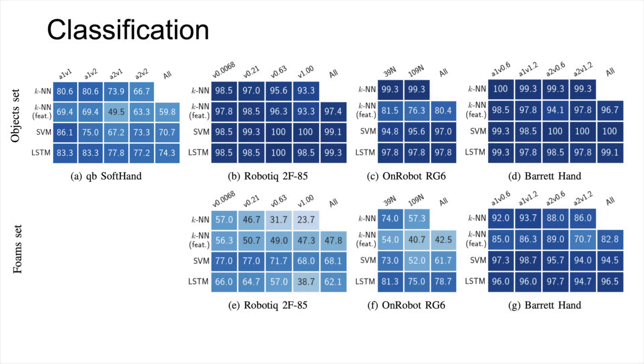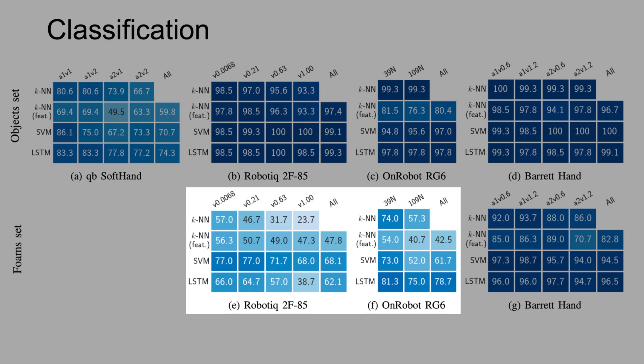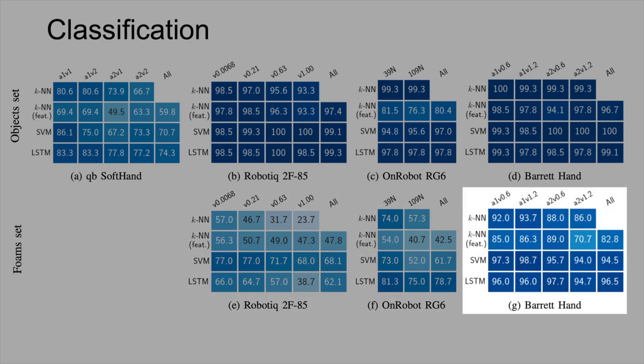On the challenging foam set, the performance of the industrial-like jaw grippers was similar, with both being outperformed by the Barrett hand, which achieved over 95% accuracy.